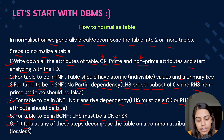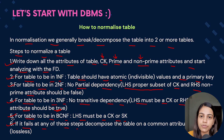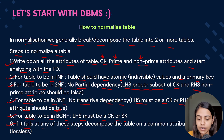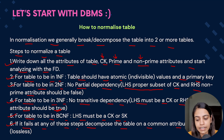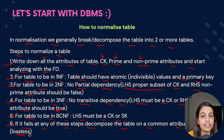If the table fails at any of these steps — checking for 1NF, 2NF, 3NF, or BCNF — then we have to decompose the table on a common attribute which is a candidate key, so that the decomposition is lossless, meaning data is not lost.